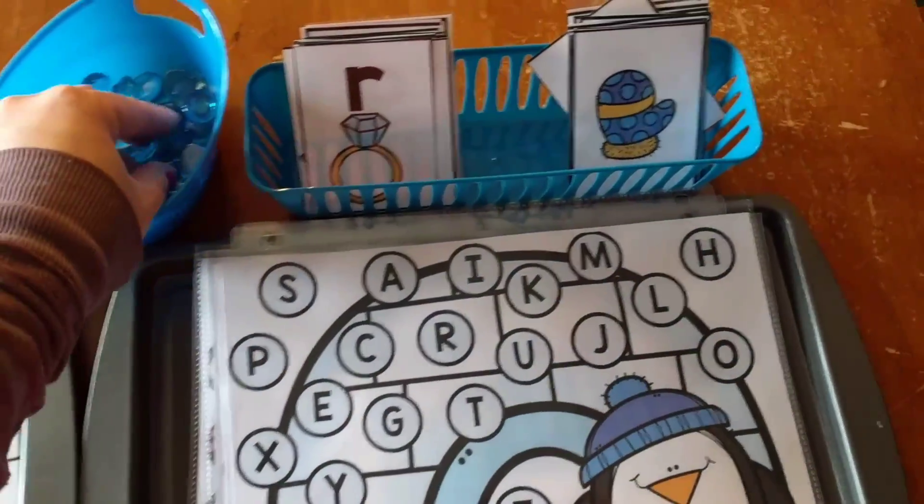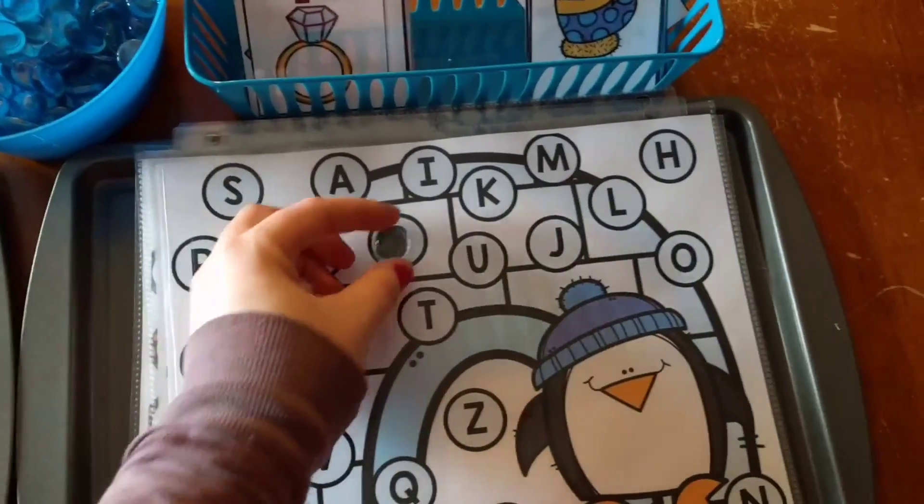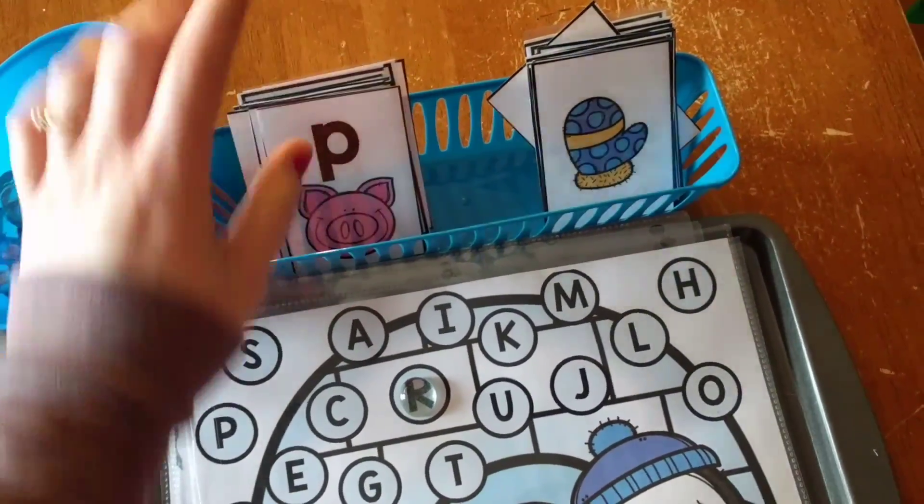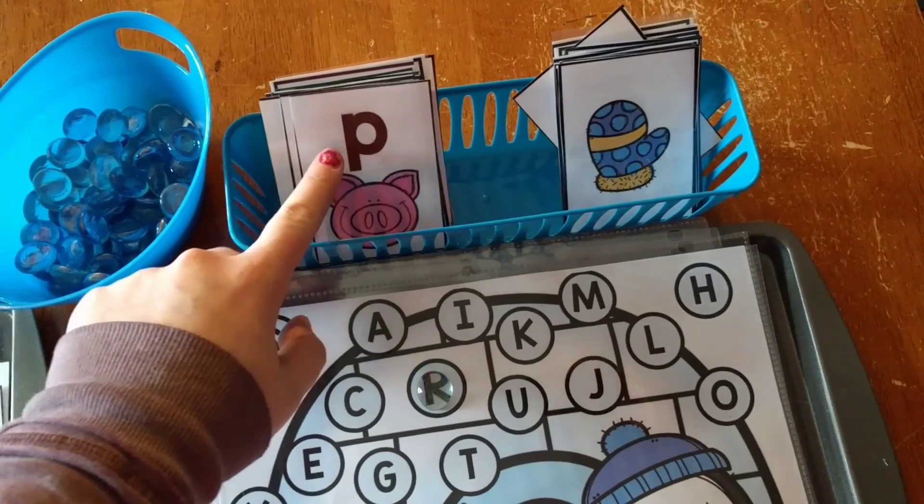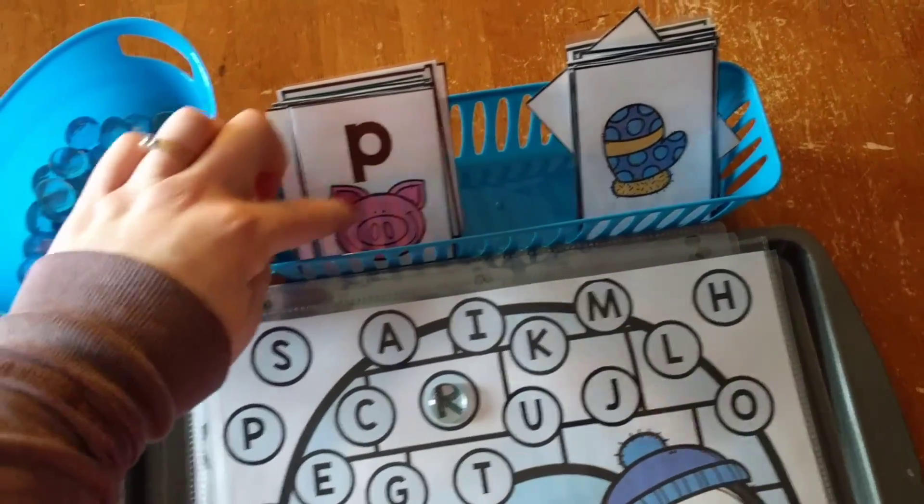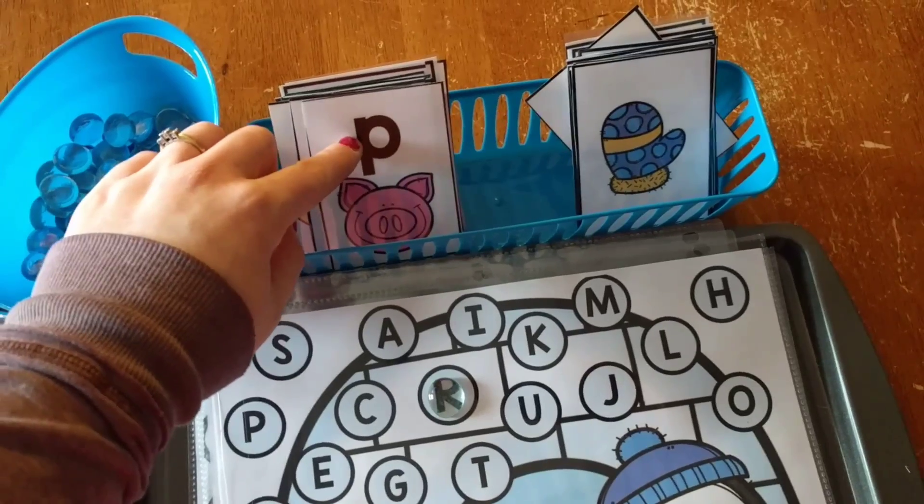He's going to look at his mat, he's going to take a gem, and he's going to cover up capital R. Very good. Let's try another one. That's P. P says P, P, pig. Now remember, he just turned three, so I'm going to have to tell him the sounds and remind him. P says P, P, pig.